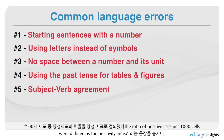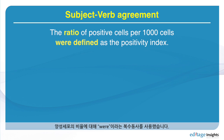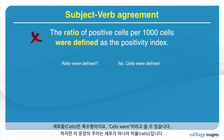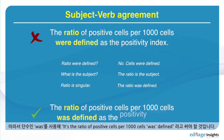For example, if I were to say the ratio of positive cells per thousand cells were defined as the positivity index — the ratio of positive cells were defined — it looks like cells is the subject because cells is plural. But cells is not the subject. The ratio is the subject, so it should be: the ratio of positive cells per thousand cells was defined as the positivity index.